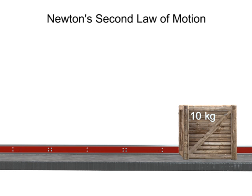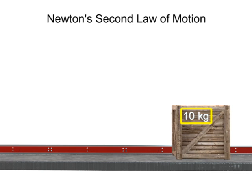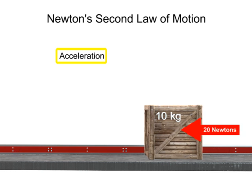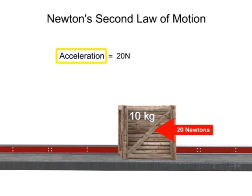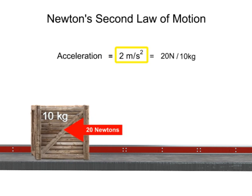Take, for instance, a scenario where you're pushing a 10-kilogram box along the ground with a force of 20 newtons. The acceleration of the box equals the force you exert, divided by the mass of the box, or 2 meters per second squared.